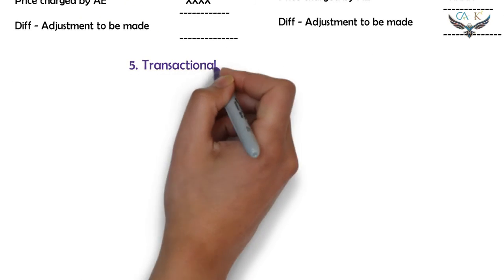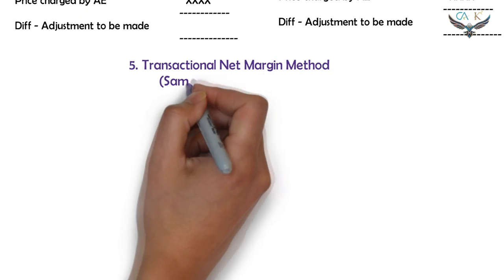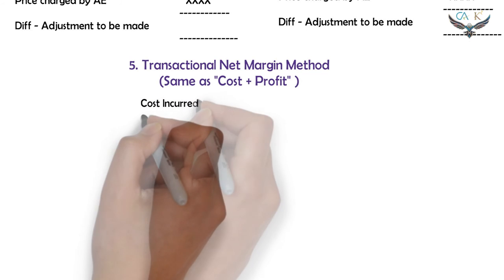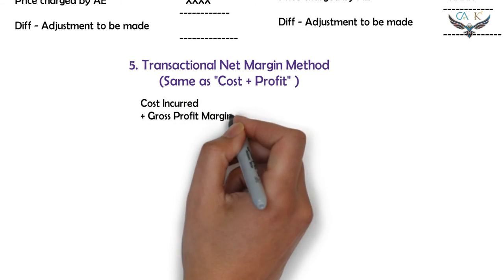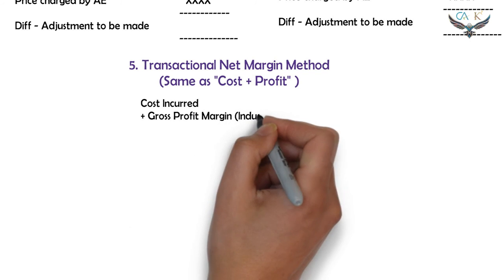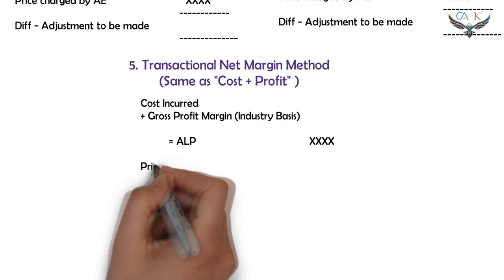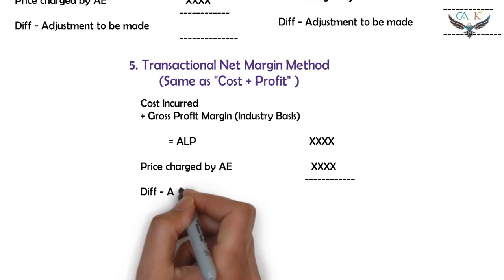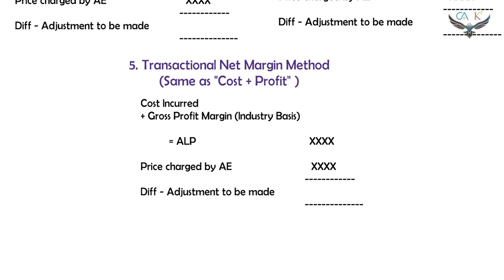The fifth and final method is the Transactional Net Margin Method. This is also similar to the Cost Plus Profit Method. Calculate the cost incurred by the assessee, then add the gross profit margin on the basis of the industry to arrive at the arm's length price. From the arm's length price, deduct the actual price charged by the associated enterprise to arrive at the transfer pricing adjustment.